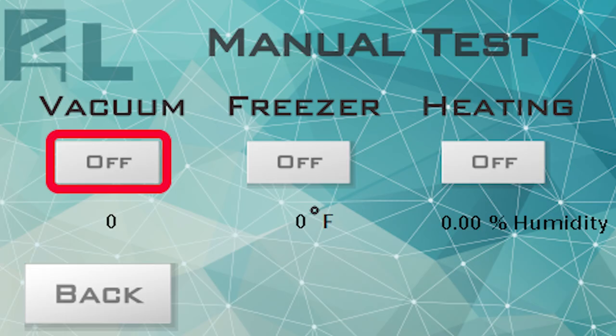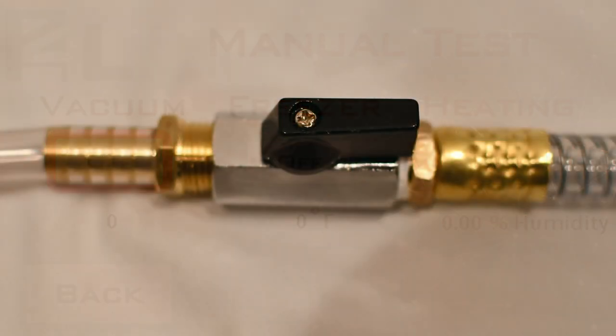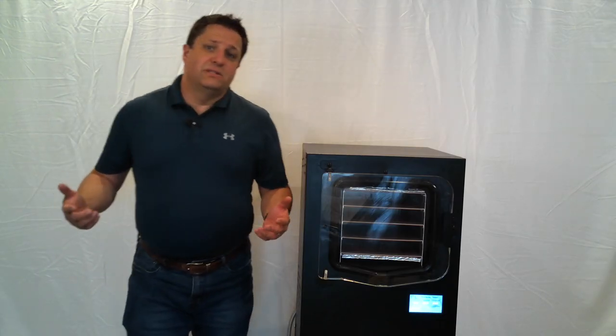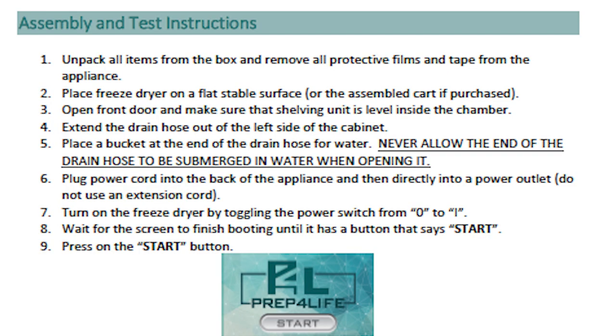Turn off the vacuum pump and open the drain valve to release the vacuum in the chamber. We will now run a test of all the functions of the freeze dryer as found in the beginning of the owner's manual.